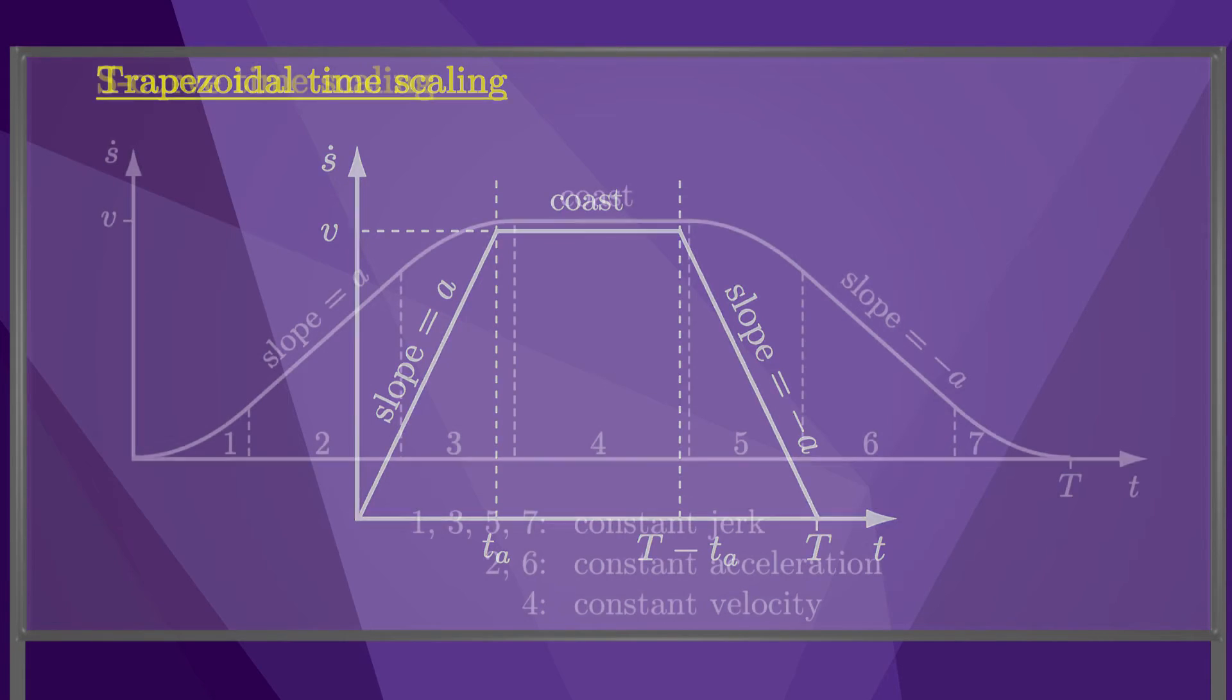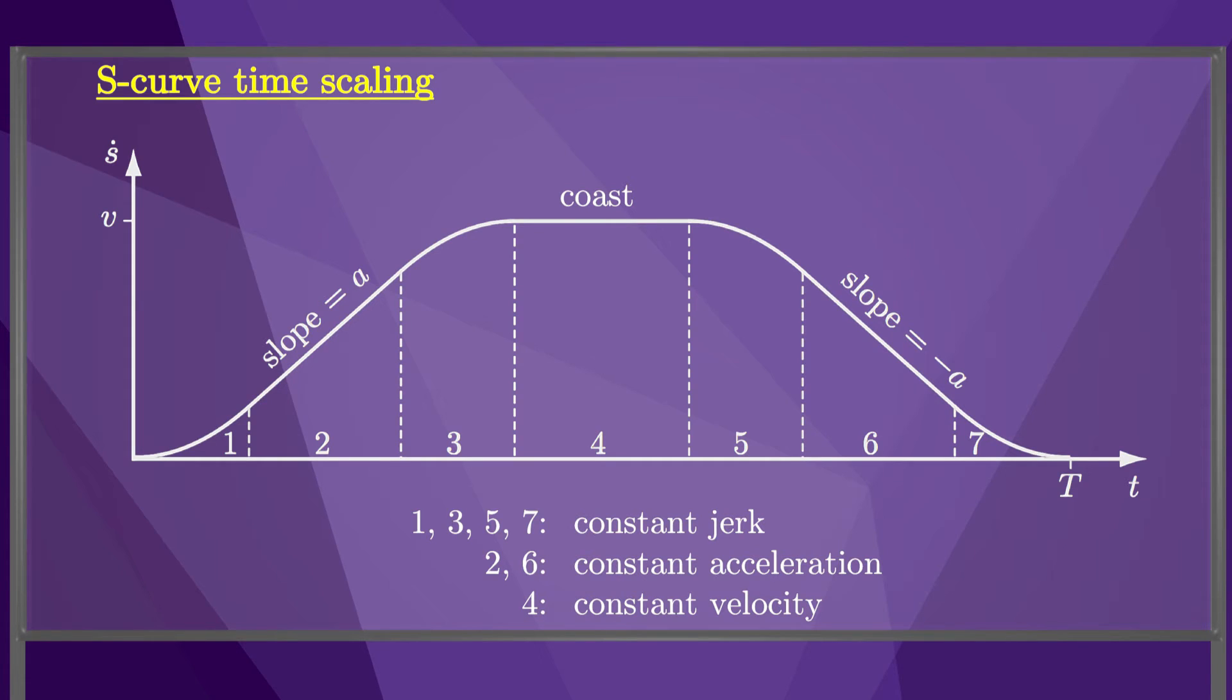If this is undesirable, we can use an s-curve time scaling, shown here as an s-dot plot. An s-curve has seven segments. In the first segment, the robot follows a constant jerk. Jerk is the time derivative of acceleration.